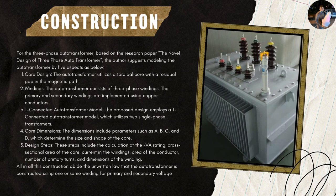The core dimension refers to how the winding takes place, with parameters such as A, B, C, and D. For a more detailed explanation, you can refer to the research paper in the references. Lastly, the design step includes the calculation of KVA rating, cross-sectional area of the core, current in the winding, area of the conductor, number of turns, and dimensions of the winding. For more detail, you can also look at the research paper.